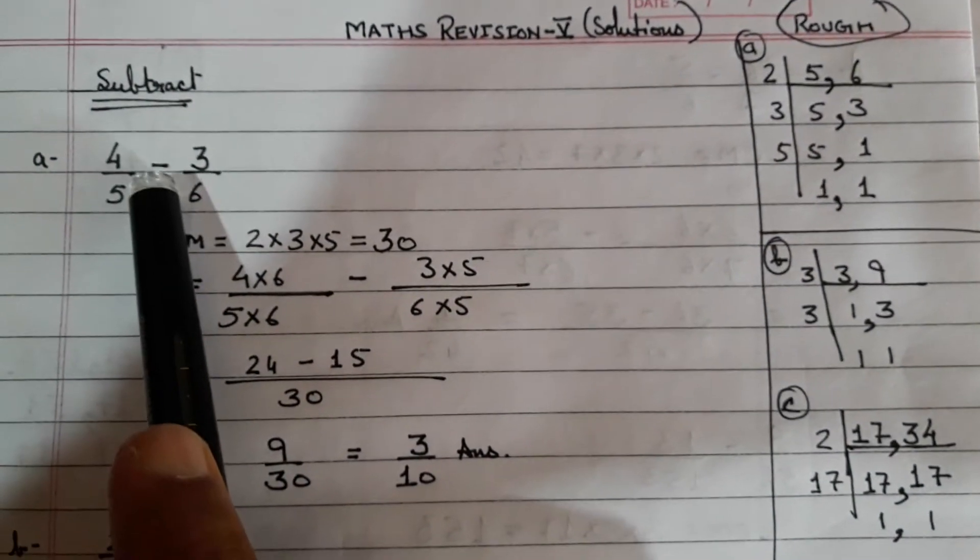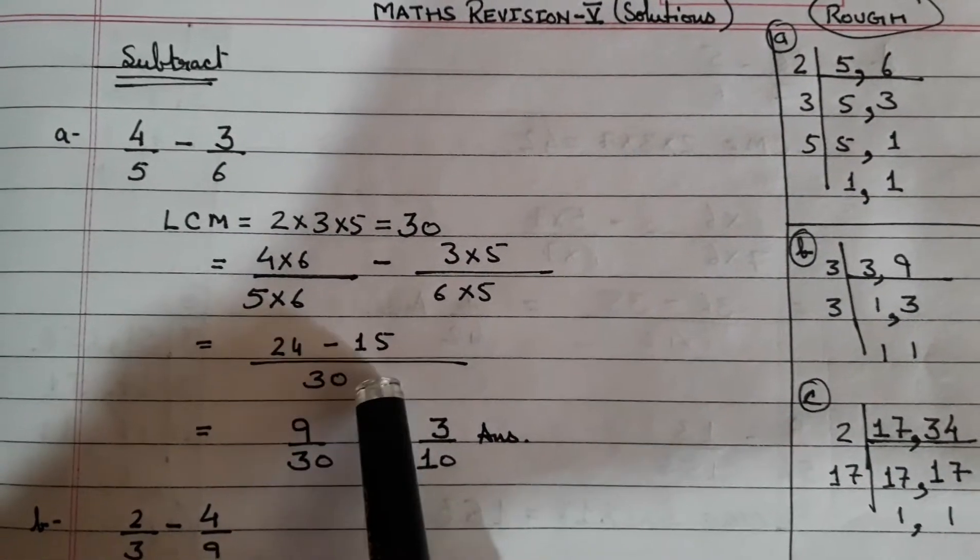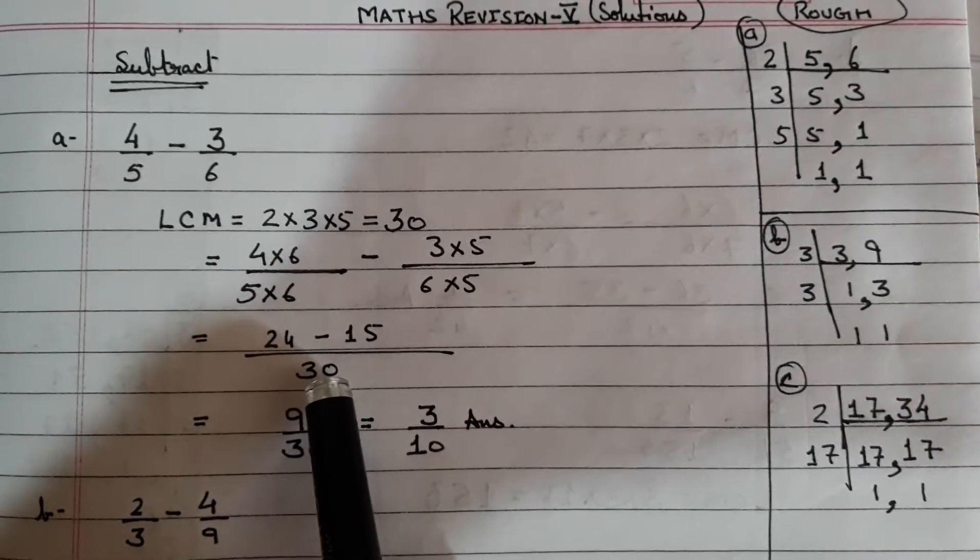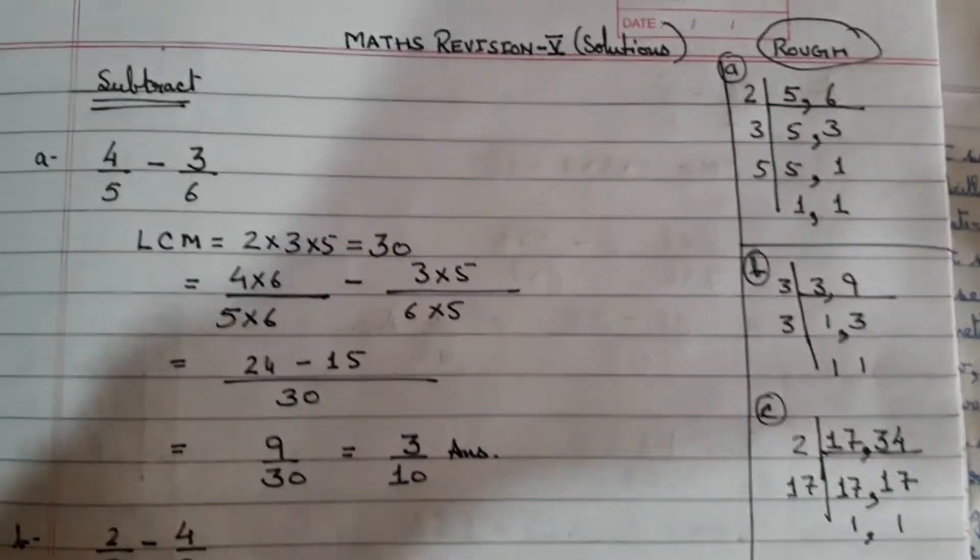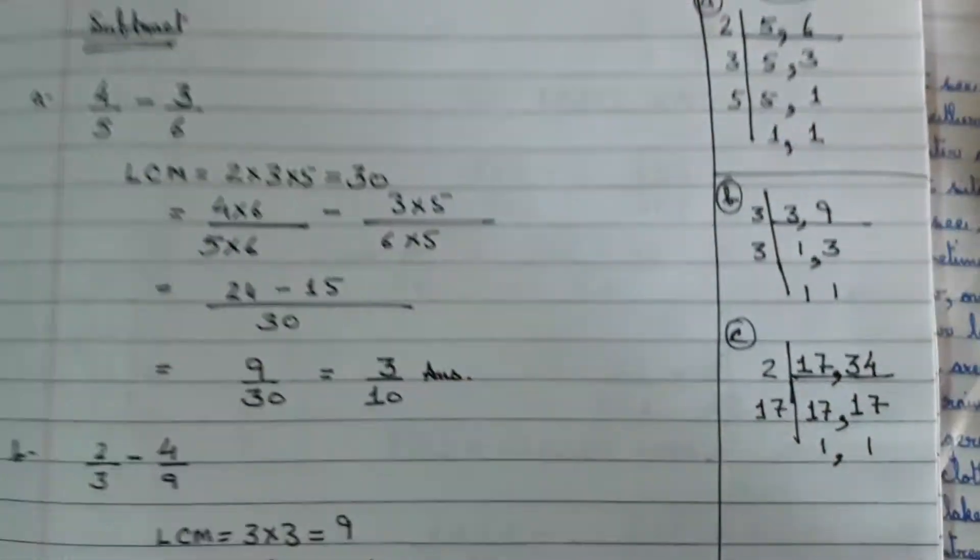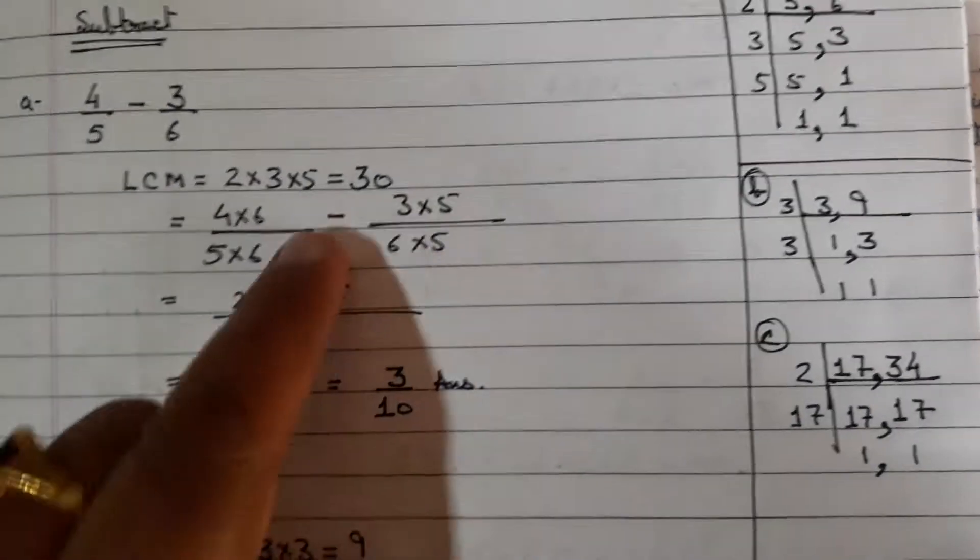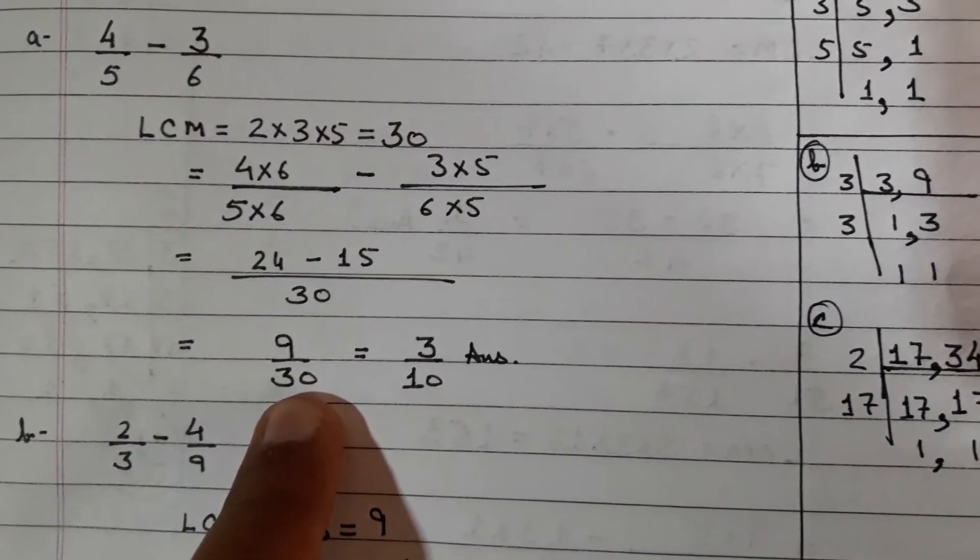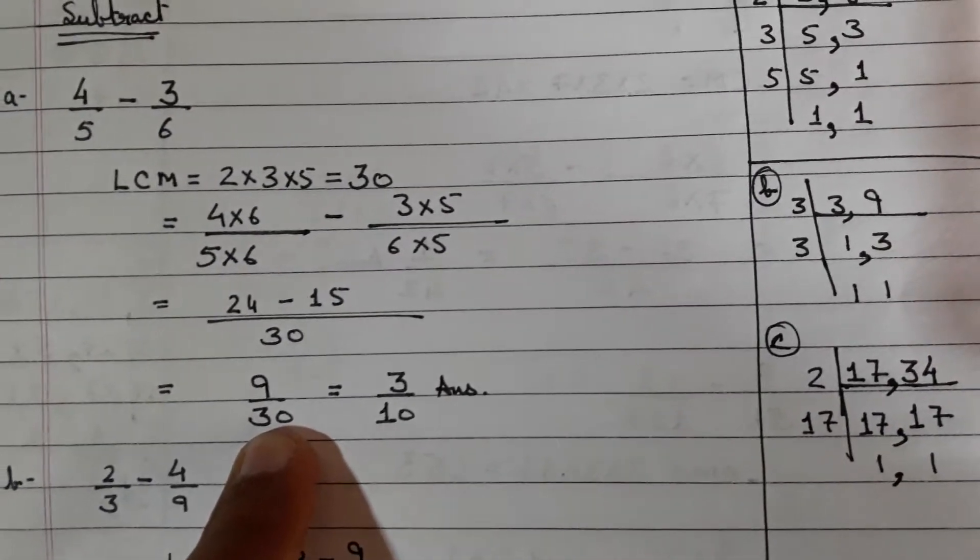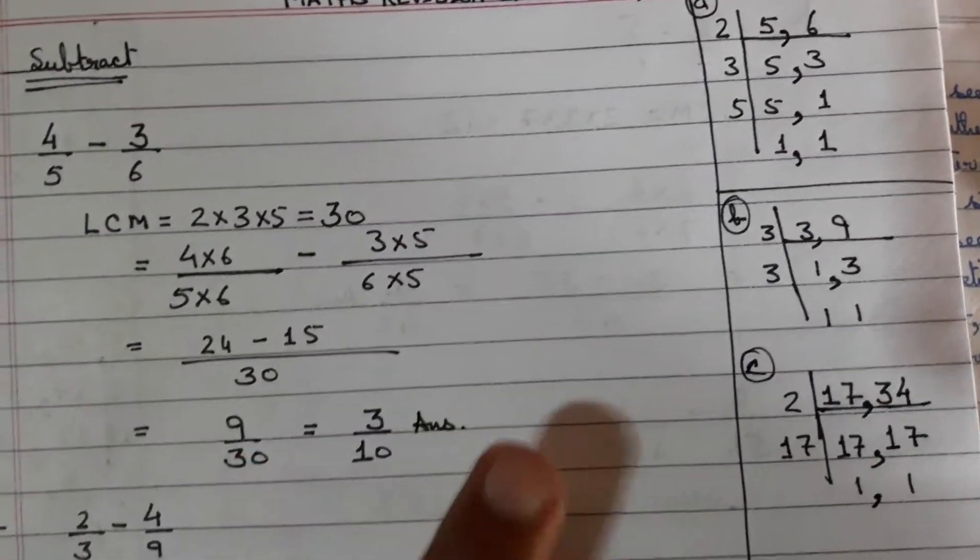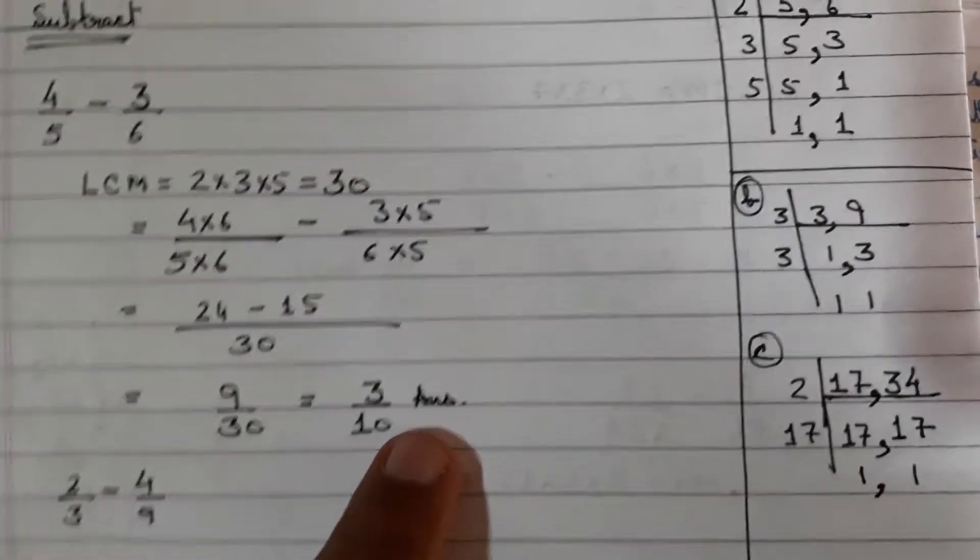Now to make it 30, 5×6 and 6×5. 30 is the common denominator, the least common multiple. 4×6 are 24 and 3×5 is 15. So 24 minus 15 is 9 by 30. Now you can further reduce 9 by 30 into a smaller fraction. 9 cannot divide 30 but can a common number divide both? Yes, 3. So 3 over 10 is your final answer. I hope this is clear.